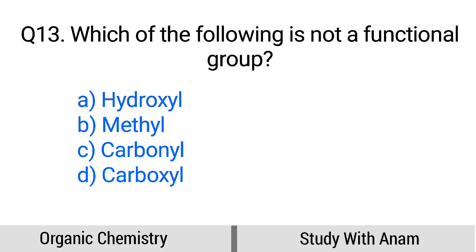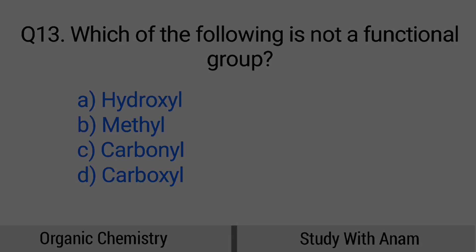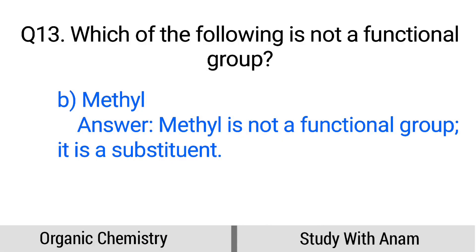Question number 13. Which of the following is not a functional group? Option A: Hydroxyl, B: Methyl, C: Carbonyl, D: Carboxyl. The correct option is option B, Methyl. Methyl is not a functional group — it is a substituent.